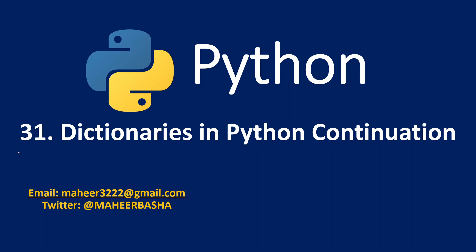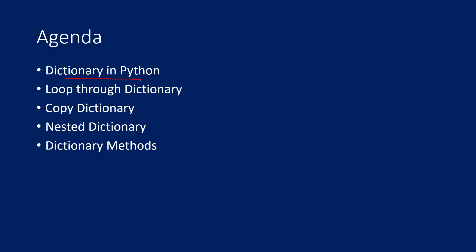Hi friends, welcome to OFA Steady's YouTube channel. This is part 31 in the Python Playlist, and it is a continuation of the previous video on Dictionaries in Python. In the previous video, we discussed what dictionaries are, how to access, remove, change, and add items. In this video, we will discuss how to loop through a dictionary, how to copy one dictionary to another, how to create nested dictionaries, and the most frequently used dictionary methods.